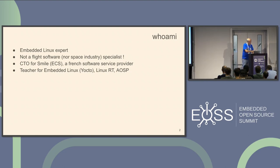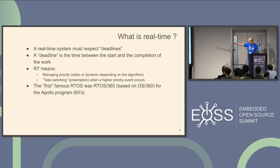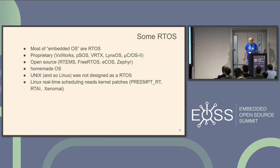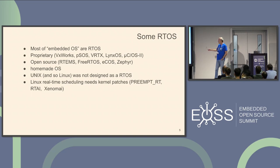We had several presentations about real-time and Preempt RT, so I think this slide is not very important — it's just an introduction. In the industry, we used to try some proprietary operating systems such as VxWorks, PSOS, VRTX, LynxOS, etc. We have some open-source RTOS such as RTEMS, FreeRTOS, etc. Lots of embedded operating systems.